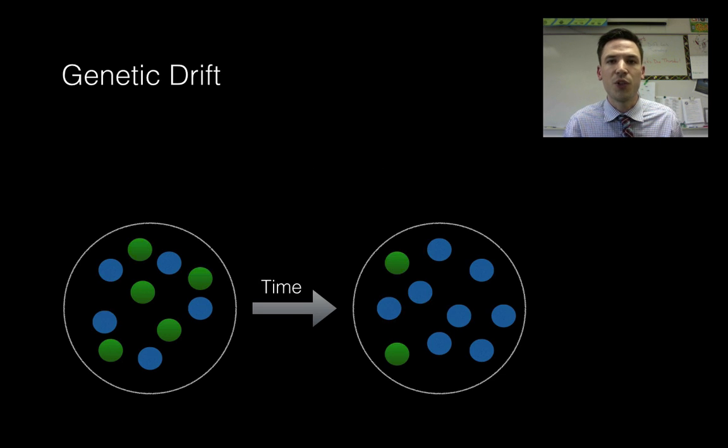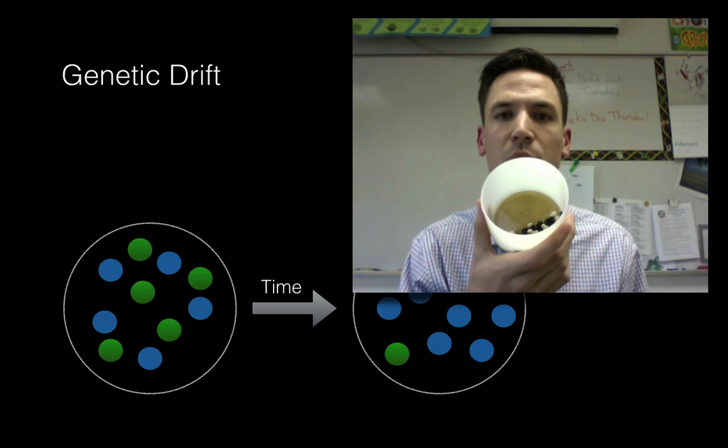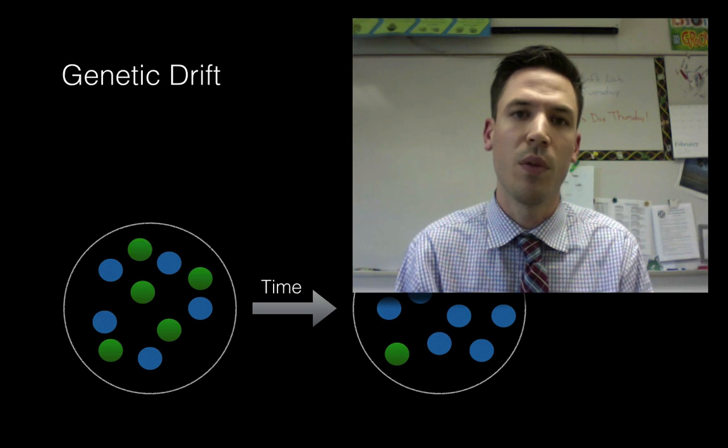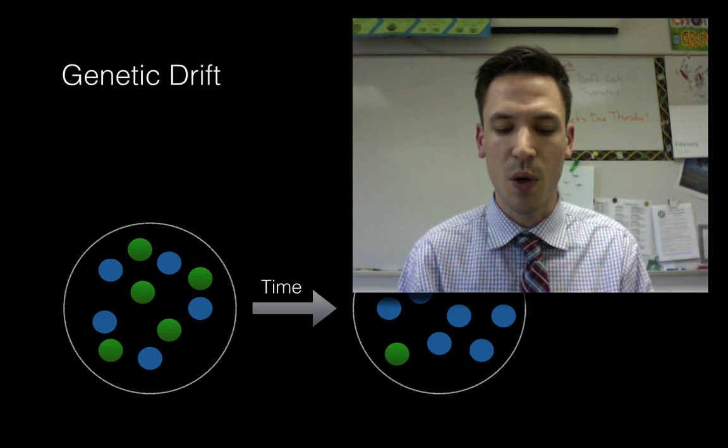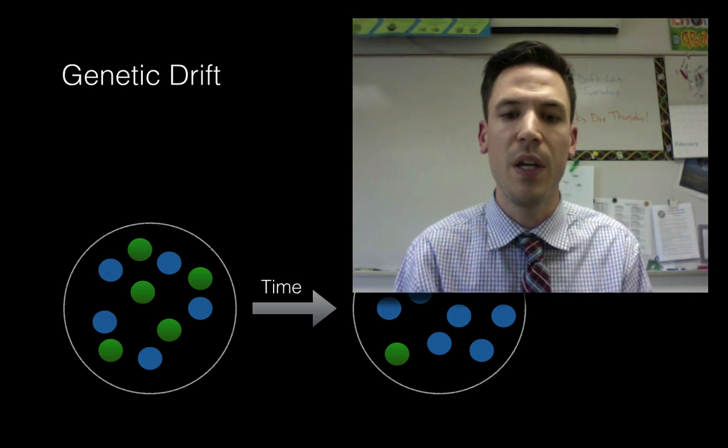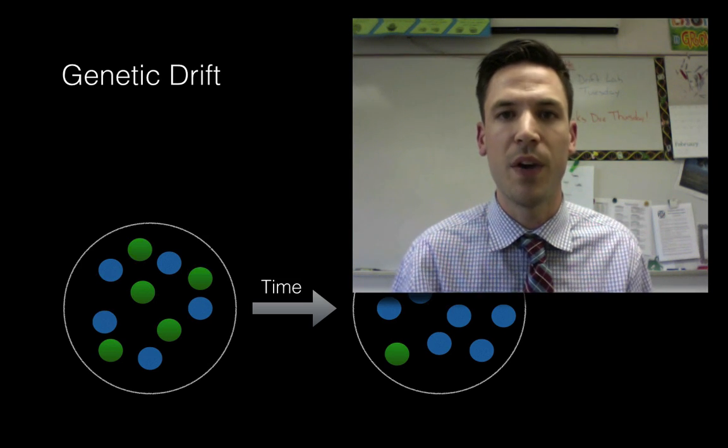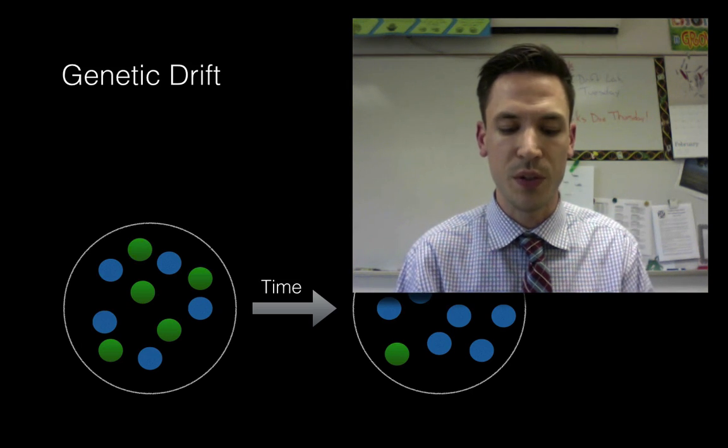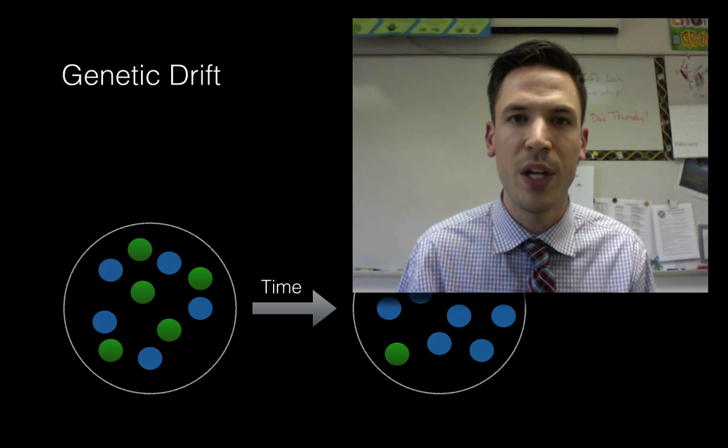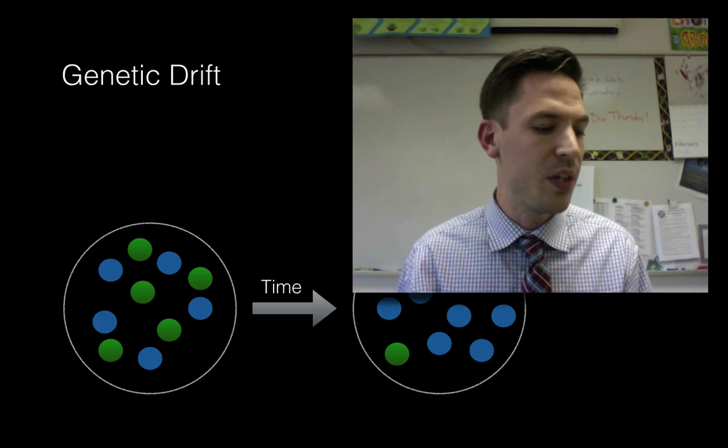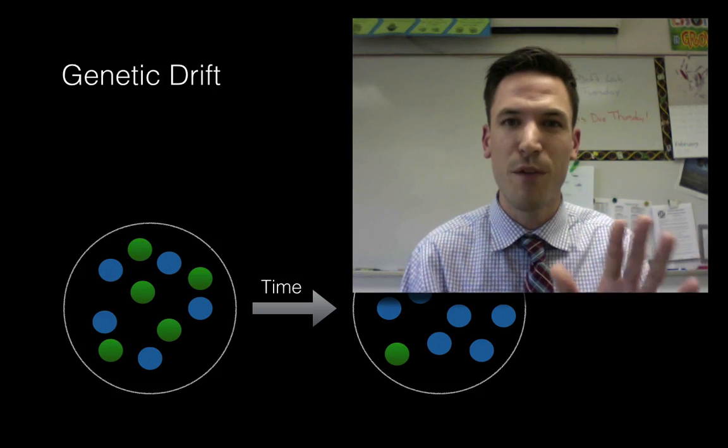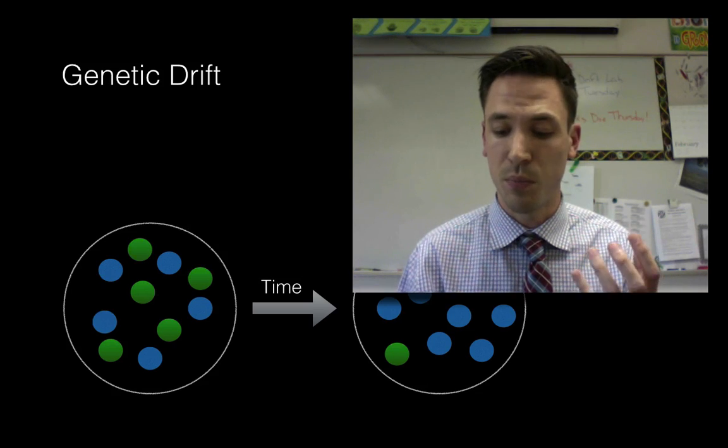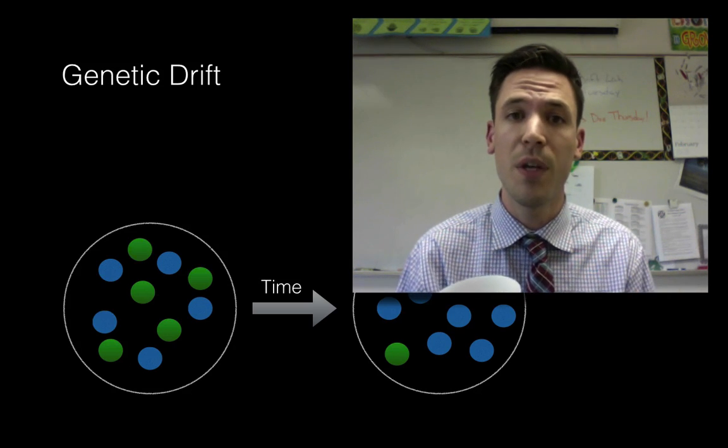The first one we're going to look at is genetic drift. So in my class, what we did was a lab using these different colored beans. We had black ones and white ones, and we used that to simulate different types of moths, light moths and dark moths. And what students did to start was they took a population size of 100, 50 of each, and they randomly selected out 50 lucky survivors. And they did this for three different trials to make three new generations. What most groups saw is that the population didn't really change much. They still had, after three times of doing this, just around 50-50 of white ones to black ones.